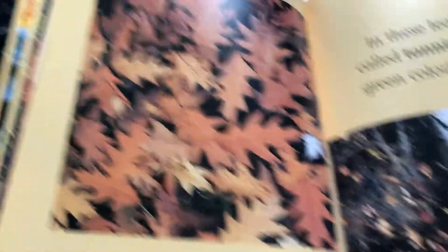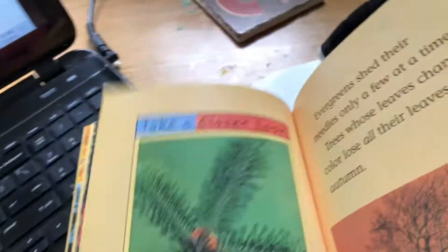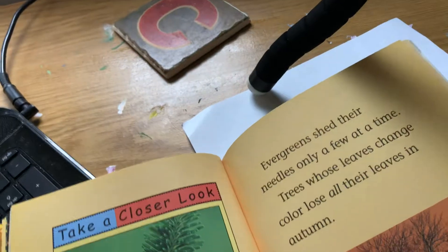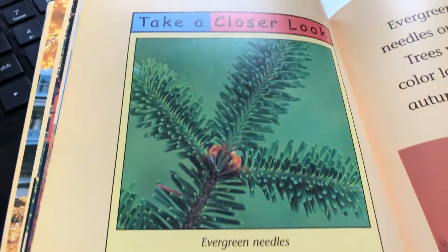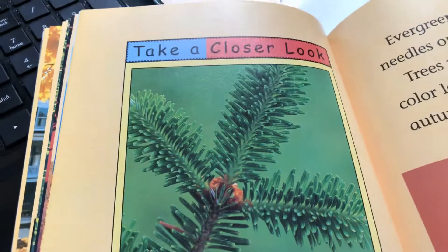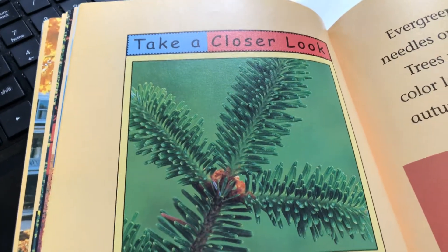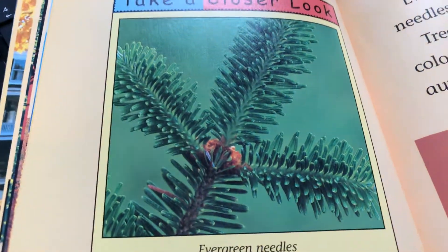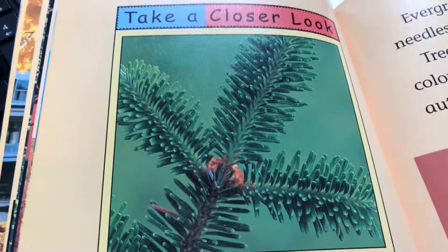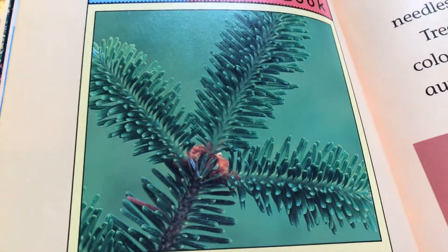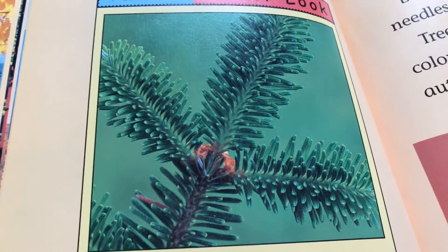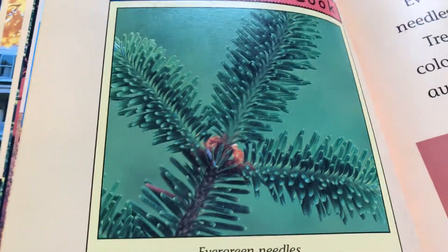In oak leaves there's a color called tannin that shows through as the green fades. Some of you might have a big oak tree by your house — there's one right outside our school. There are some kinds of leaves that will always stay green; we call them evergreens. They have some tough, narrow little leaves called needles.